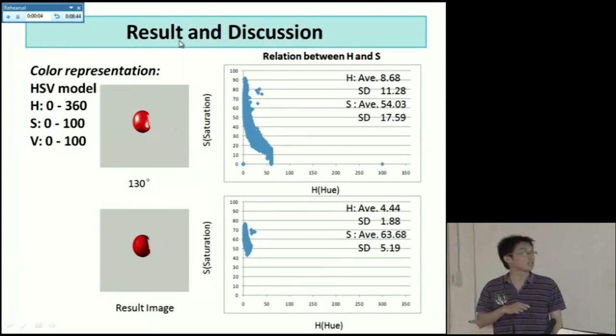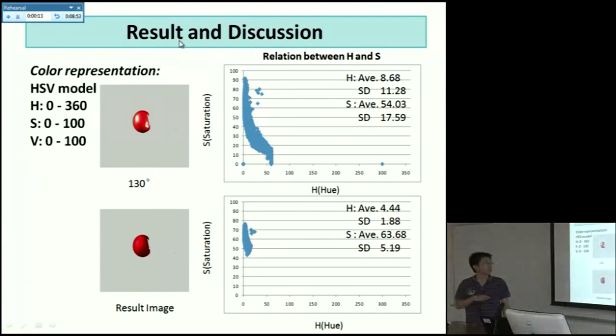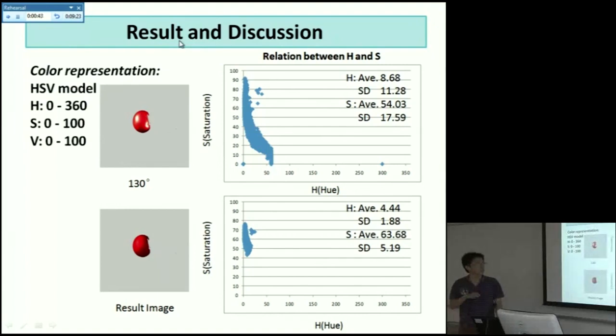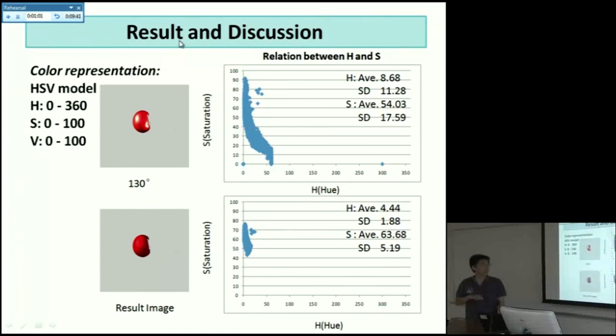Next, let's see the color representation improvement. Here, all the images are converted to the HSV model. Here is the range of the H-value, S-value, and V-value. These two figures show the relation between H and S, and correspond to these two images in the tomato area. This is the worst situation with two halations there. And this is our result image. The y-axis is the saturation value. We can see in this original image, some of the tomato pixels, their S-value is lower than 40 or even lower than 30. Which means the color information is lost in these pixels. But in our result image, all the pixels of the tomato area, their S-value is above 40. So we can still read the color information from this image of the tomato.